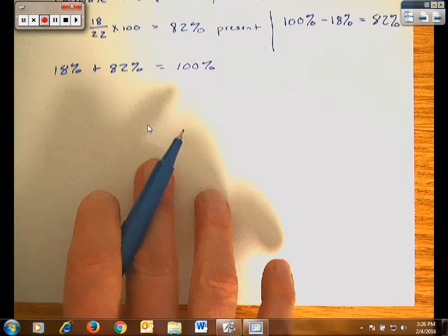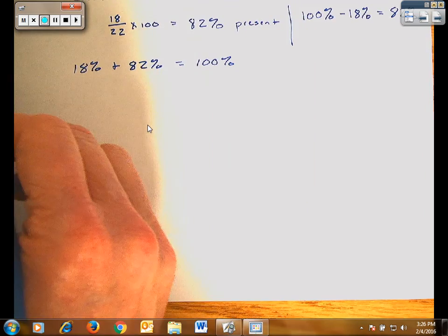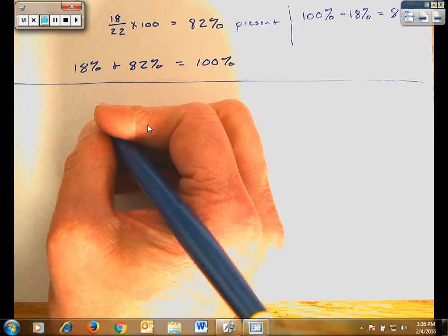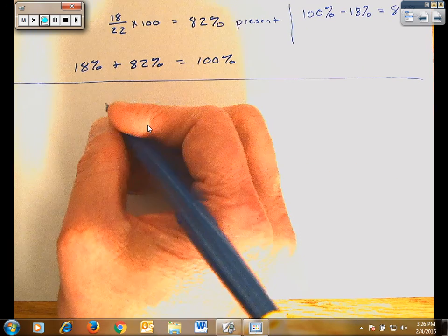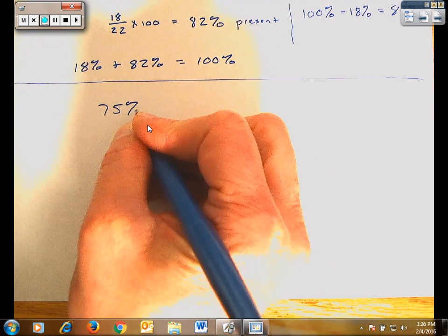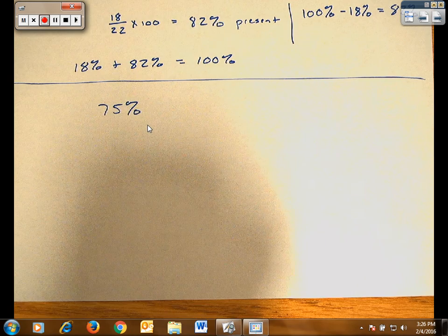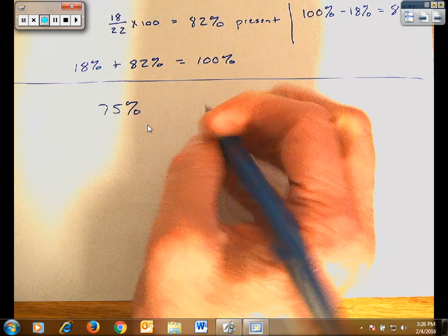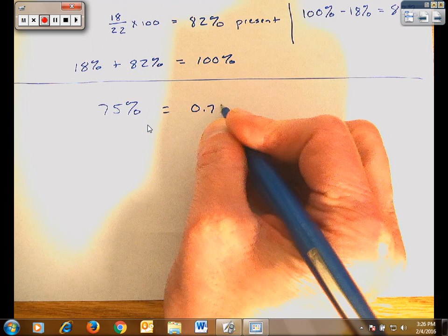We can take these percents and we can convert them into decimals. And to do that, we're just going to move the decimal point two places to the left. So 75%, if we want to convert that into a decimal, we would move that decimal point two places to the left. That's 0.75.